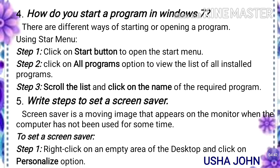Fourth question: how do you start a program in Windows 7? There are different ways of starting or opening a program. Using start menu: step 1, click on start button to open the start menu; step 2, click on all programs option to view the list of all installed programs; step 3, scroll the list and click on the name of the program you want to open.